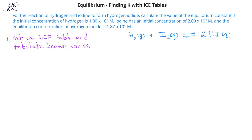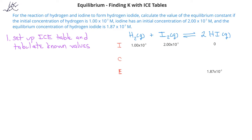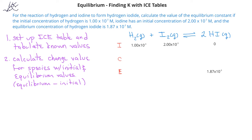Once we do that, we see that we have an initial concentration of hydrogen of 1.00 × 10⁻³, an initial concentration of iodine of 2.00 × 10⁻³, and an equilibrium concentration of hydrogen iodide of 1.87 × 10⁻³. Since we're not given the initial concentration of hydrogen iodide and it is the product, we assume its initial concentration is zero. Now we can identify species that have both an initial and an equilibrium value — in this case, hydrogen iodide.